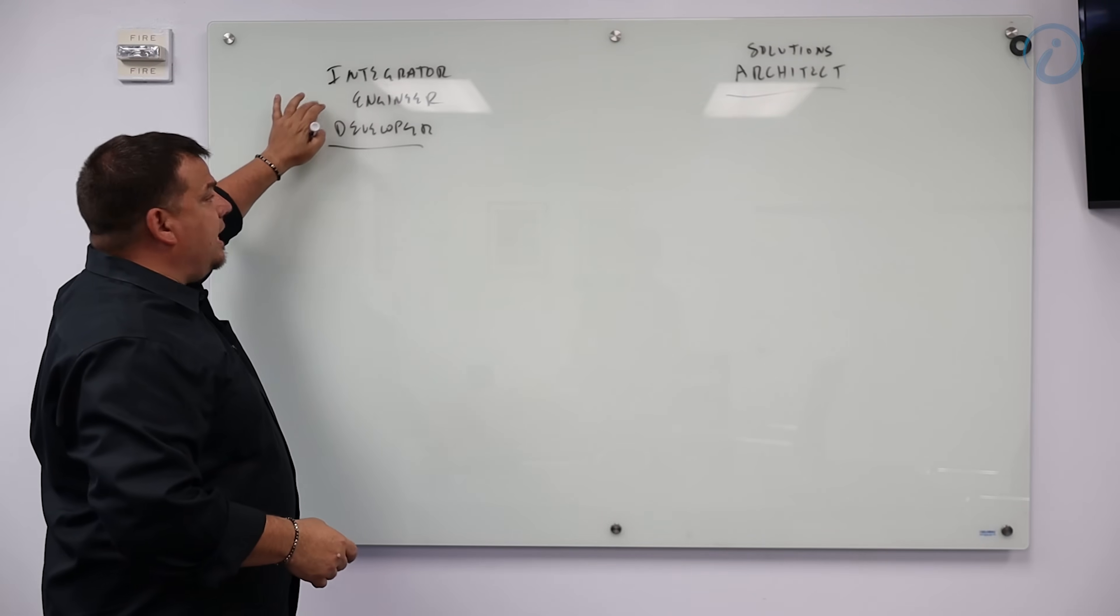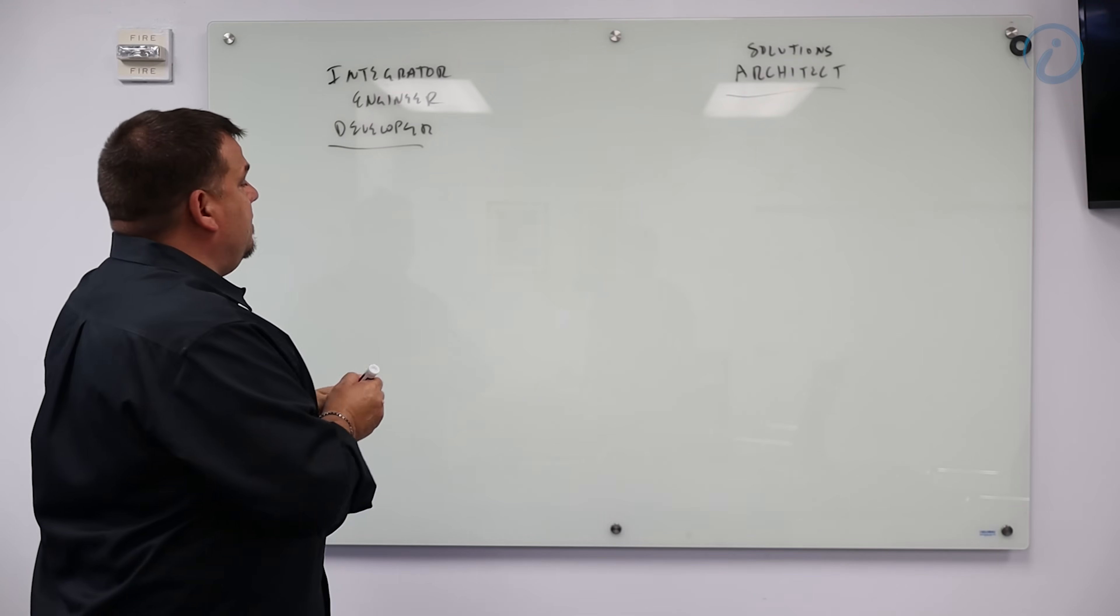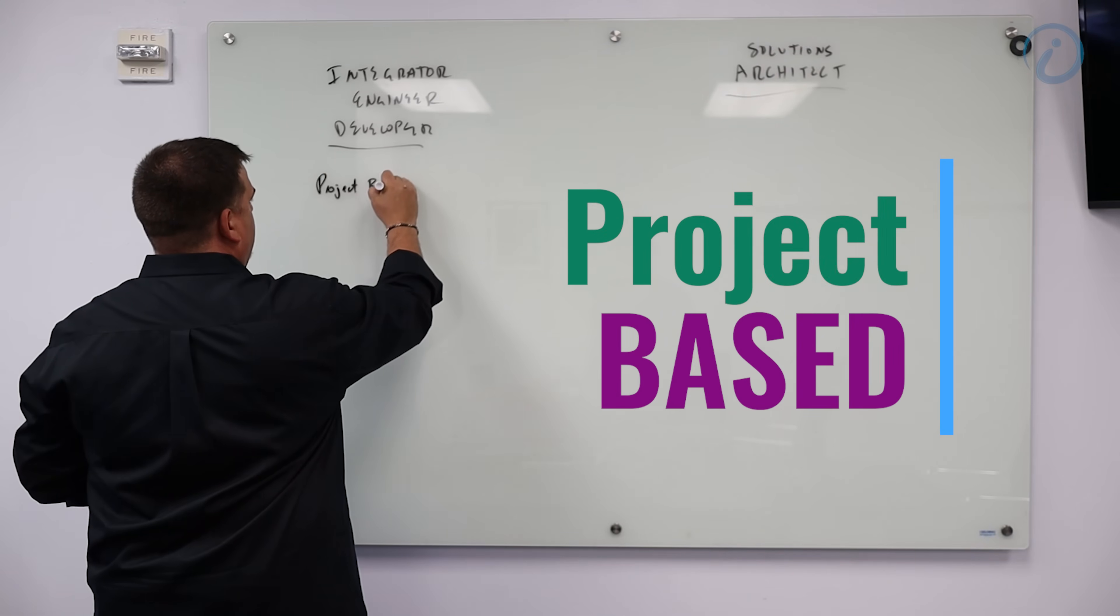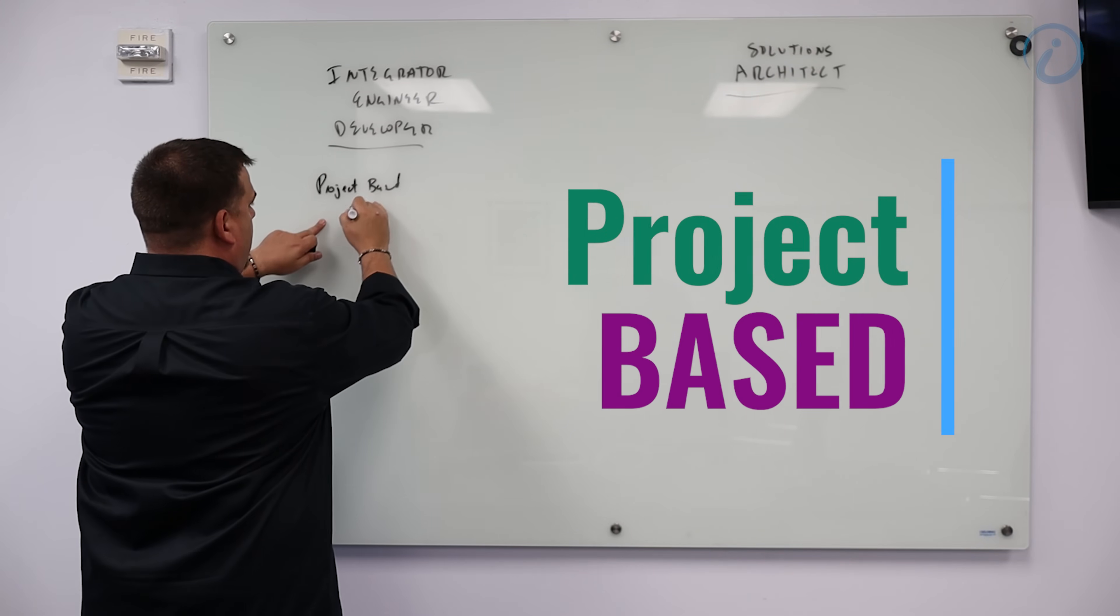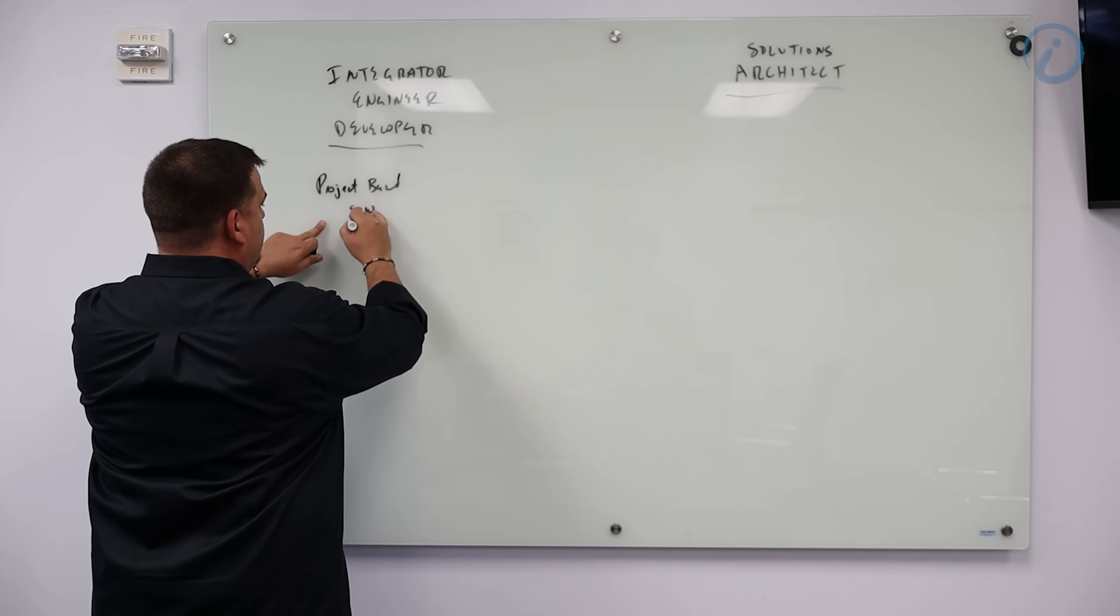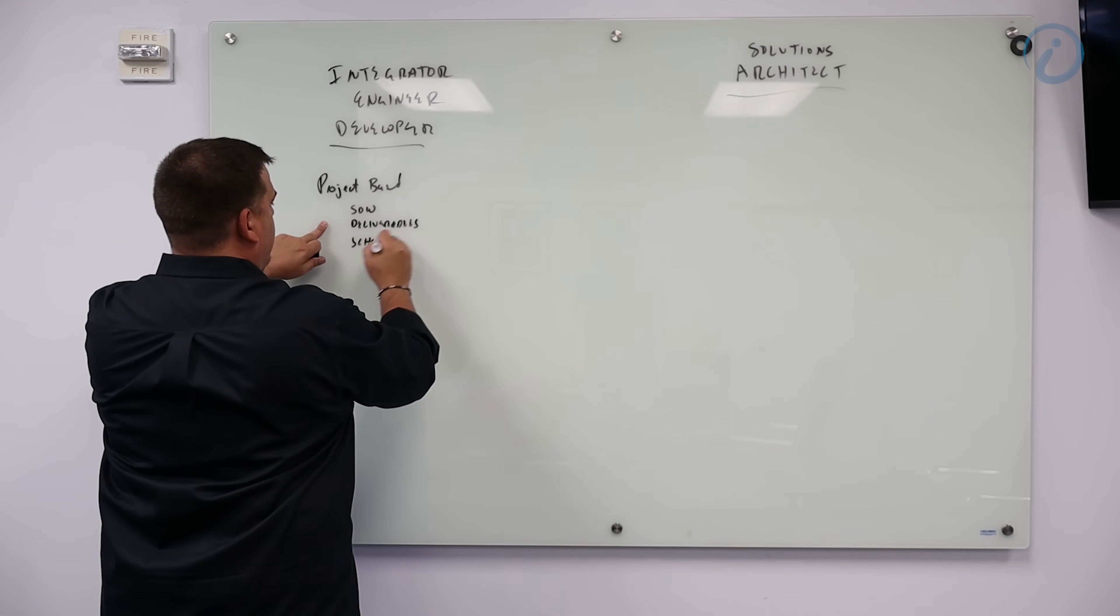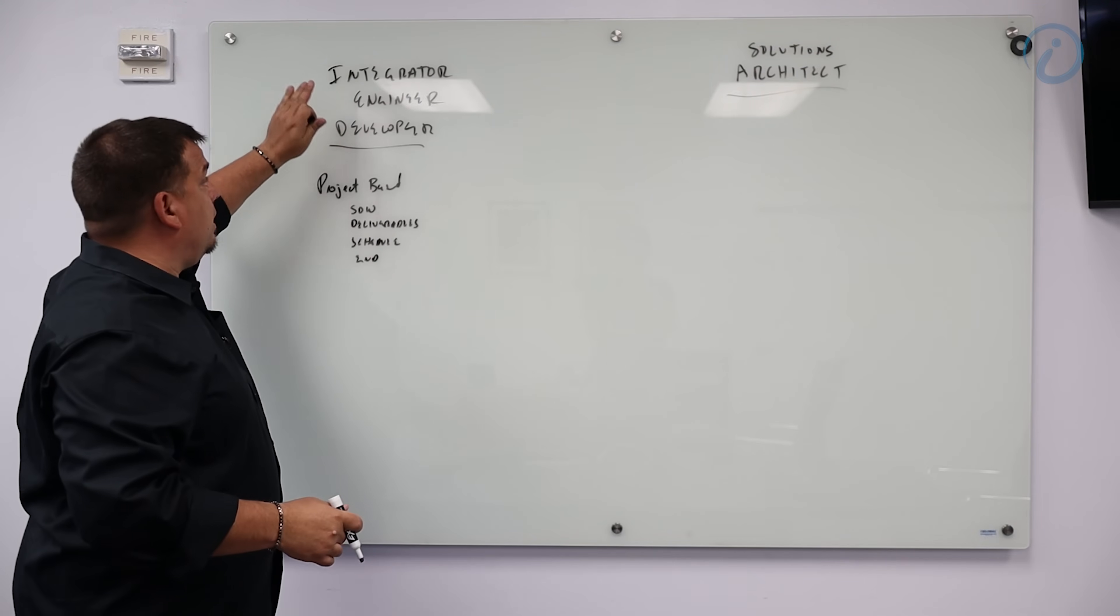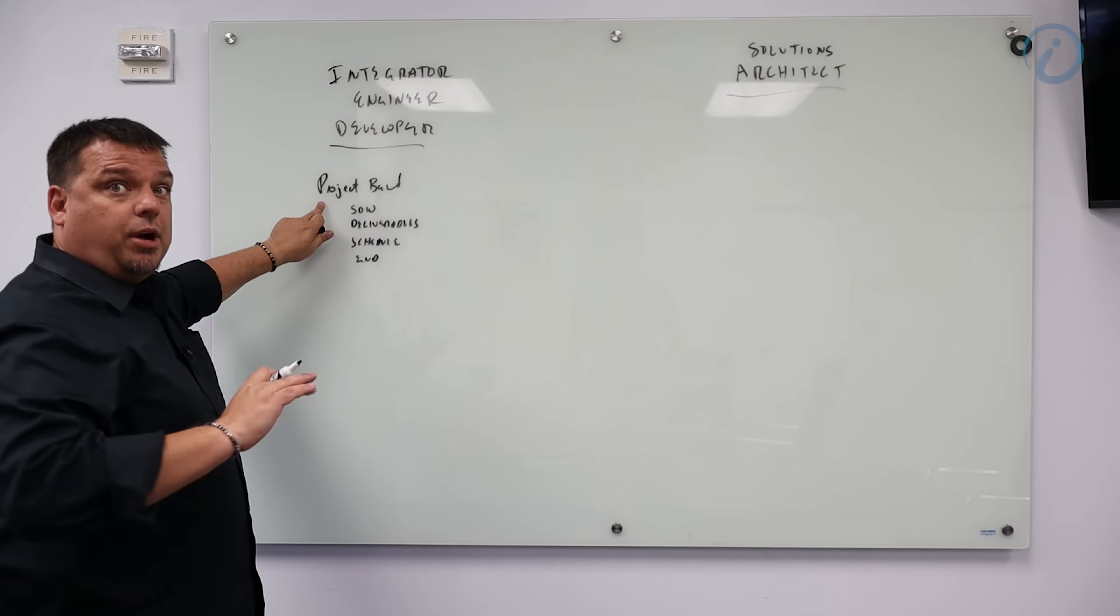So an integrator, an engineer, and a developer, they see the world as project-based. That is, they have an SOW, they have deliverables, they have a schedule, and they have an end. This is how integrators view. Integrator, engineer, developer, they're all project-based.